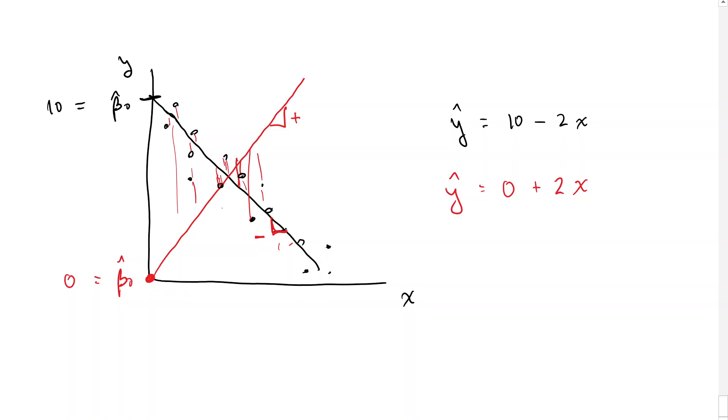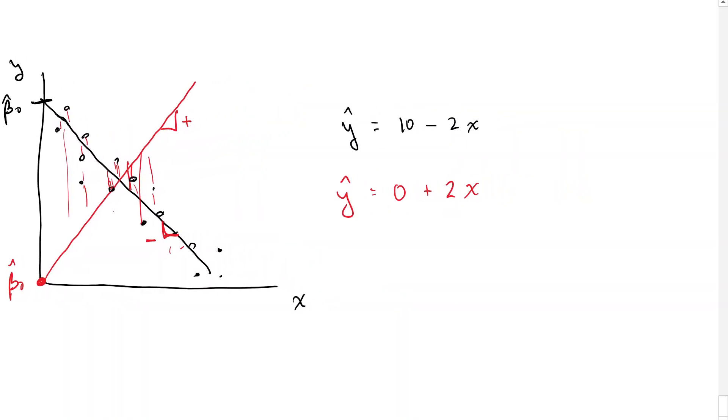and you omit the constant term, not only will it be biased, beta1, because this is beta1, and this is beta0, your beta1 is going to be biased, but it's possible that it could even be the wrong sign. So it's like,